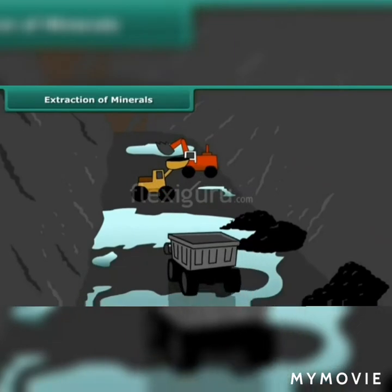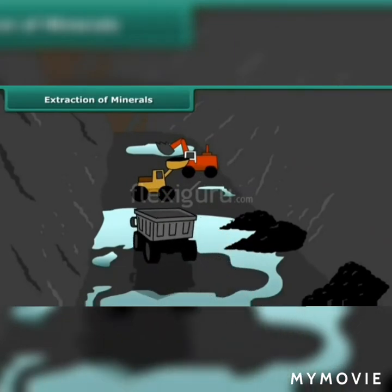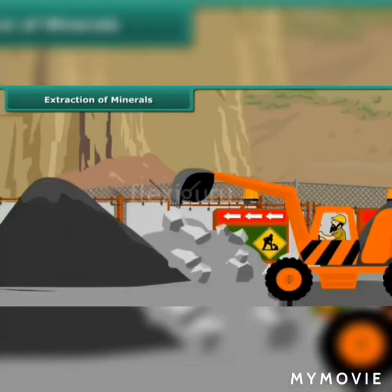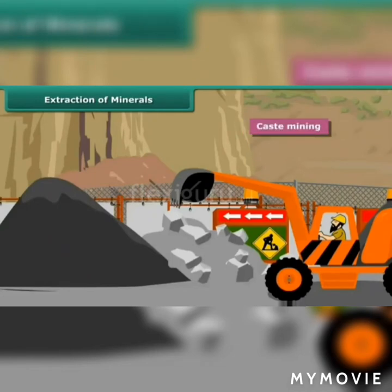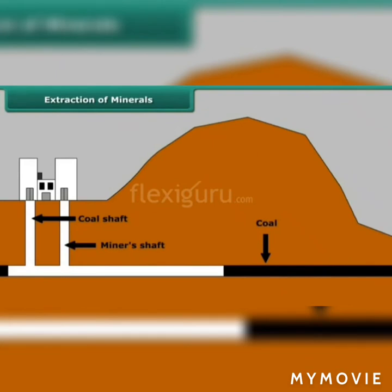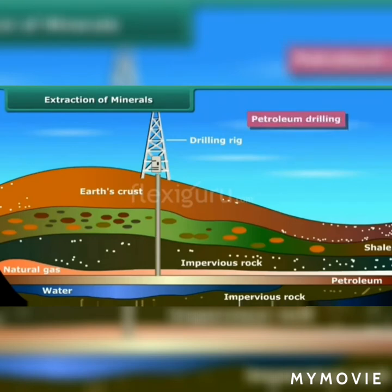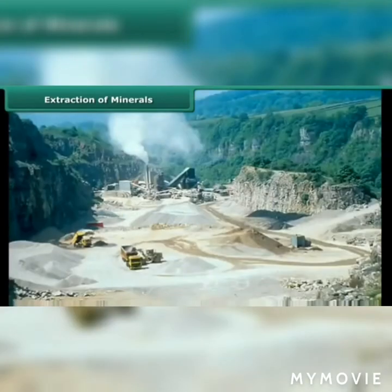We will discuss the various types of mining. Minerals that lie at shallow depths are taken out by removing the surface layer — this is known as open-cast mining. Deep walls called shafts take out mineral deposits that lie at great depths; this is called shaft mining. Petroleum and natural gas occur far below the earth's surface, so deep wells are drilled to take them out — this is called drilling. Minerals that lie near the surface are simply dug out by the process known as quarrying.